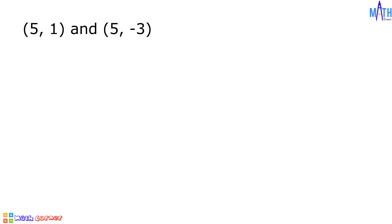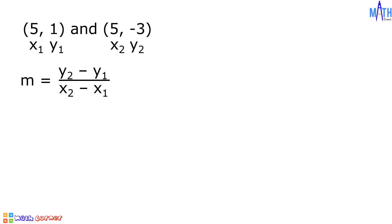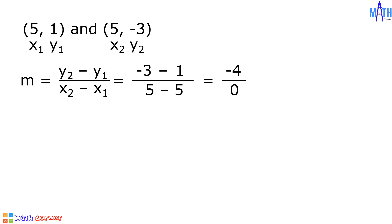Last example: let us find the slope of a line passing through the points (5, 1) and (5, -3). Let us consider 5 as x sub 1 and 1 as y sub 1, 5 as x sub 2, and -3 as y sub 2. Let us substitute the given values to the formula. If we divide any number by 0, it is undefined.